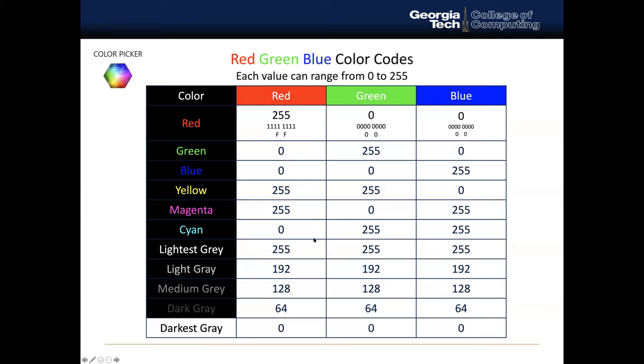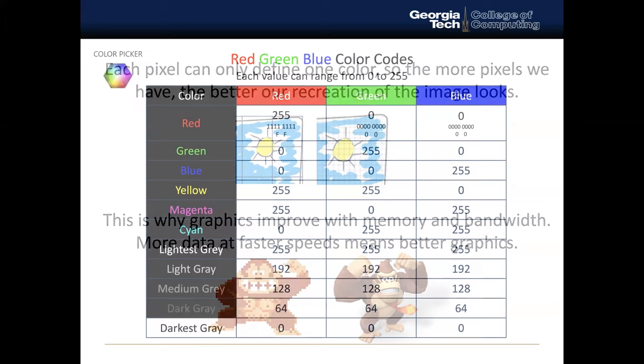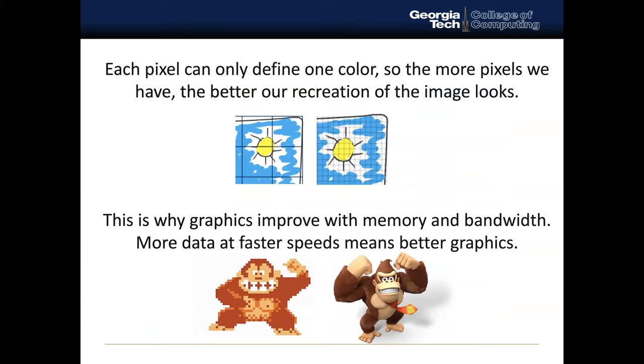Here we are able to see how the variation and the values for RGB affect the different colors that we use. And typically in most design components, you'll have a color picker that will allow for you to pick the different colors that you want to use.